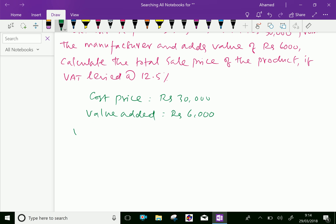So, VAT is at 12.5% equals Rs. The value added is 6,000. Since VAT is calculated only on the value added into 12.5 over 100.